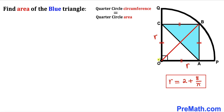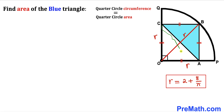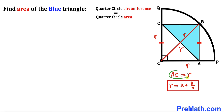Connecting center O to point B, we see that OB is the radius of the quarter circle, labeled lowercase r. OB is also the diagonal of square OABC, and AC is the other diagonal of the same square. Since the diagonals OB and AC are equal in length, AC is also equal to r.